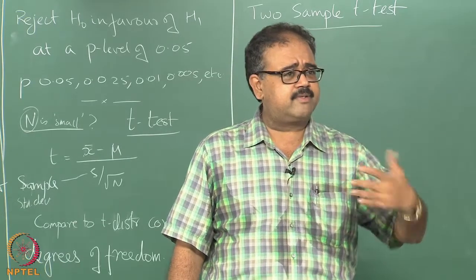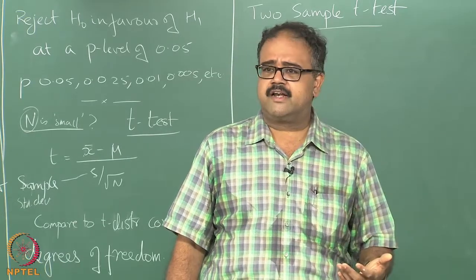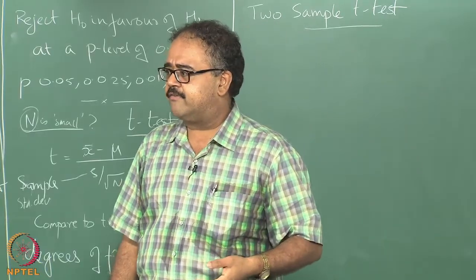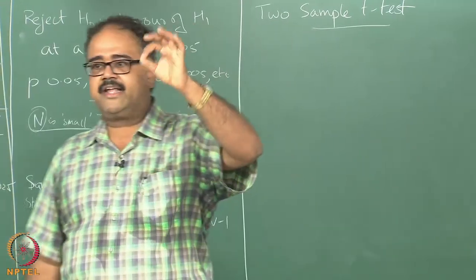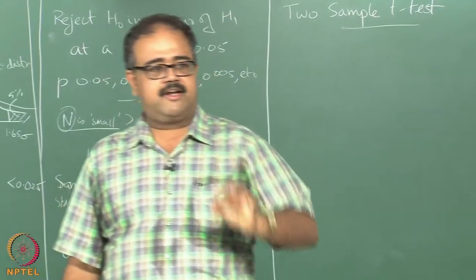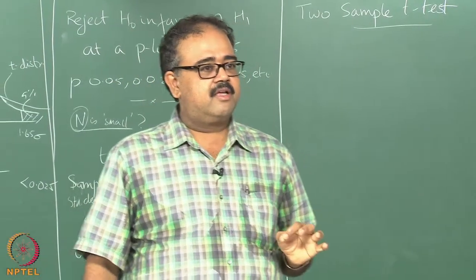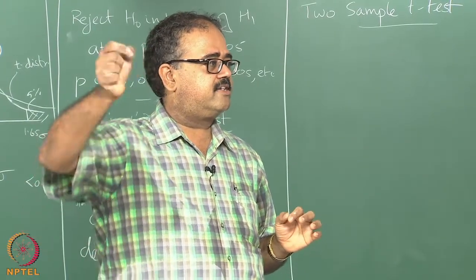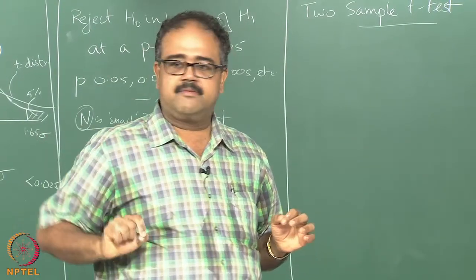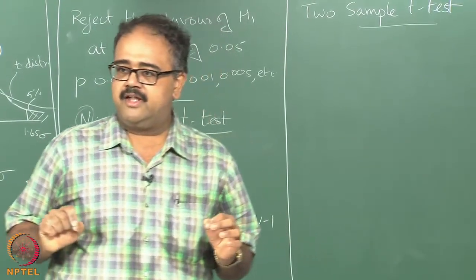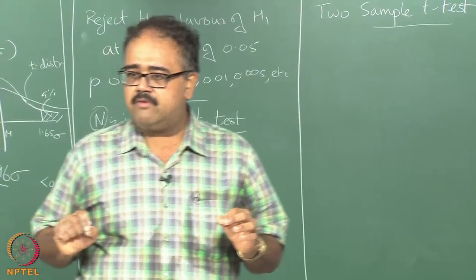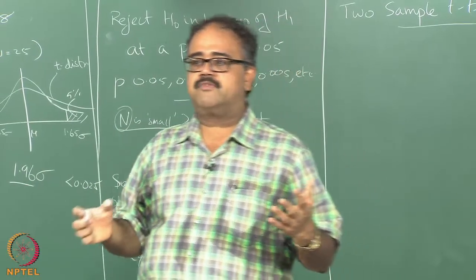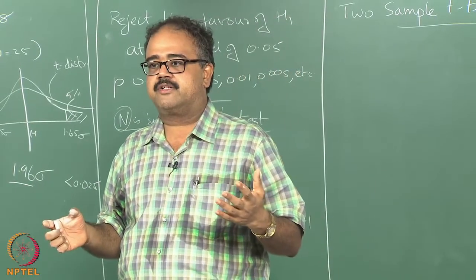You could think of something like 10-fold cross-validation. I run algorithm 1 using 10-fold cross-validation, I get 10 different numbers. I run algorithm 2 using 10-fold cross-validation, I get 10 different numbers. Now, what do I mean by the question: do they come from the same distribution?